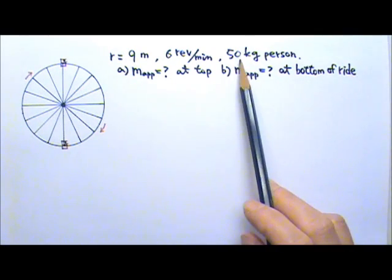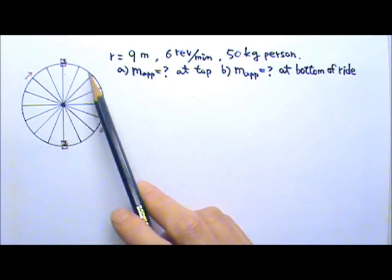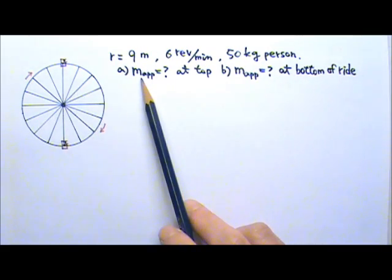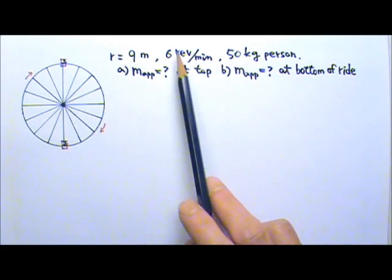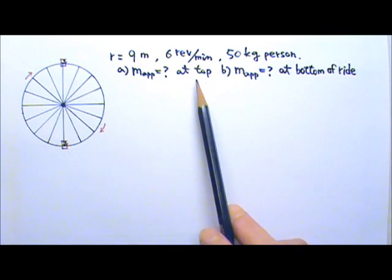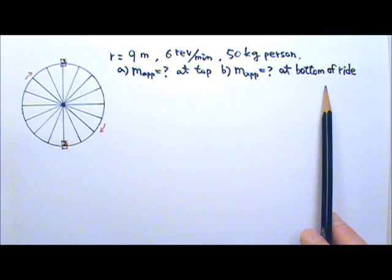A 50 kg person takes a ride on a small but fast ferris wheel. It has a radius of 9 meters and rotates 6 revolutions every minute. We're looking for the person's apparent mass at the very top and at the very bottom of the ride.